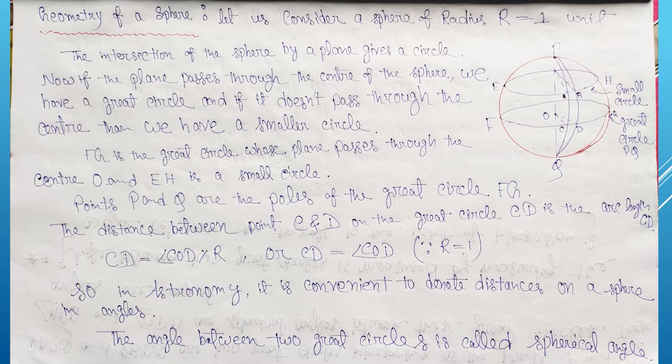From basic geometry we get CD equal to angle COD times r, or CD equal to angle COD as we have considered r equal to one. So in astronomy it is convenient to denote the distance on a sphere in angles.